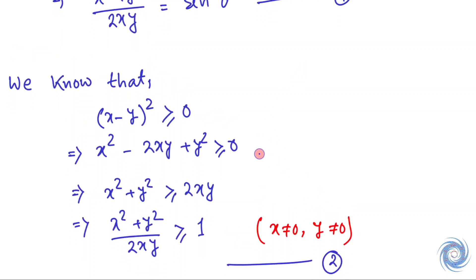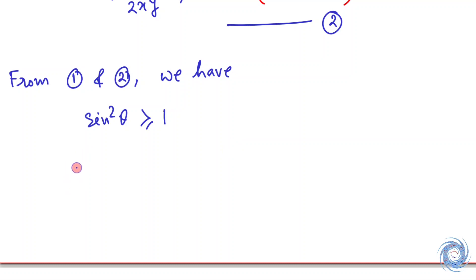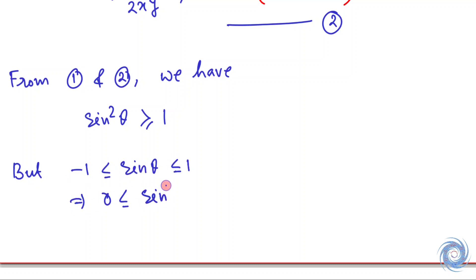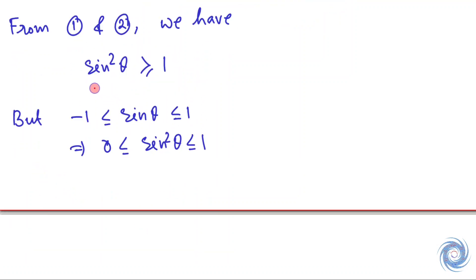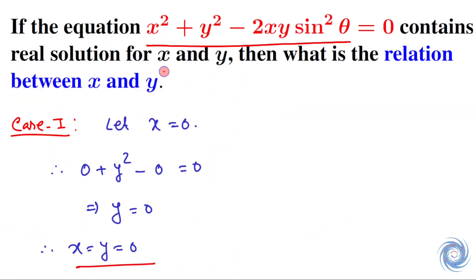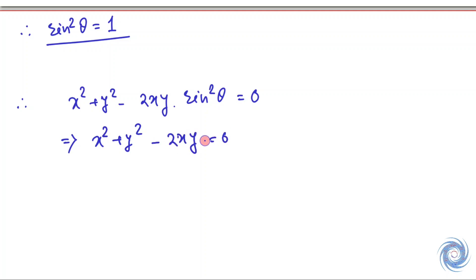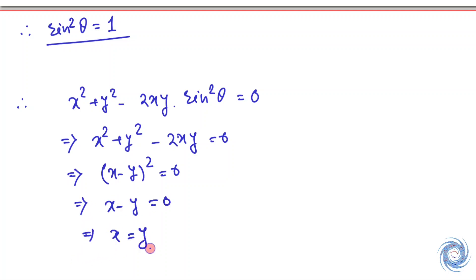Now from equations one and two, we have sin²θ ≥ 1. And since sin²θ ≤ 1 always holds, combining these two results we have sin²θ = 1. So from the given equation, taking sin²θ = 1, we arrive at x = y.